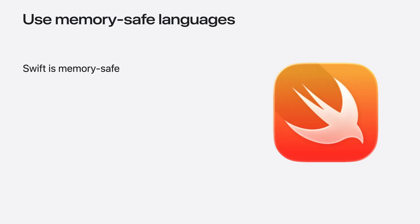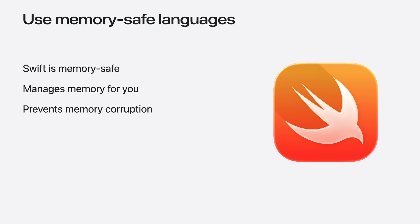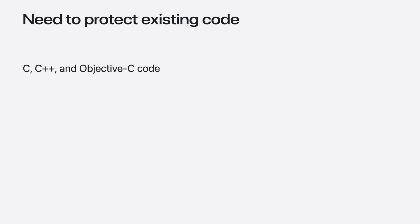The best way to prevent memory corruption is to use memory-safe languages such as Swift. By managing memory for you, memory-safe languages ensure that programming mistakes cannot lead to memory corruption. But even if you're writing all of your new code in Swift, your app may still have some C and C++ code as part of an existing code base, or it might rely on external libraries written in languages which do not provide memory safety.